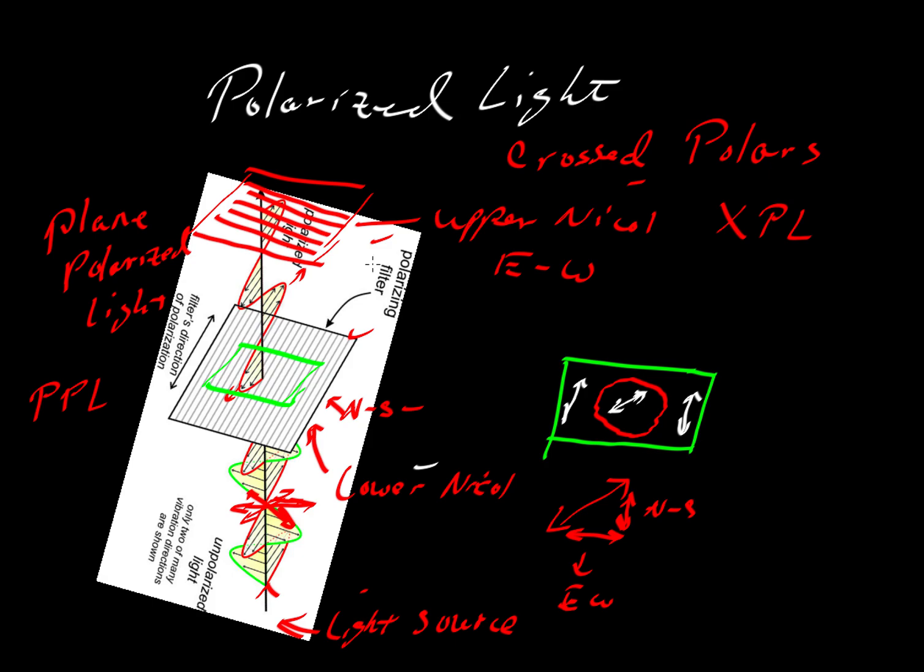They would ordinarily block all the light if there was nothing here. You take this green material here, which we could barely see, pull it off the stage, all the light would be blocked. This lower nickel would only pass north-south, this guy would only pass east-west, and so what we would see would be dark.